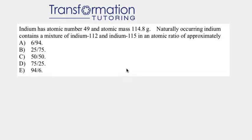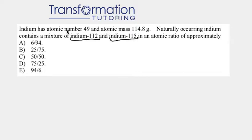Indium has atomic number 49 and atomic mass 114.8 grams. Naturally occurring indium contains a mixture of indium-112 and indium-115 in an atomic ratio of approximately what? Isotopes are atoms of the same element with a different mass. So we have indium-112 and indium-115, and we're also told that indium has an atomic mass of 114.8 grams.